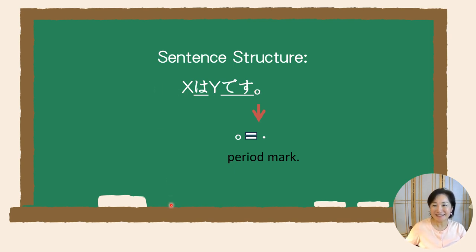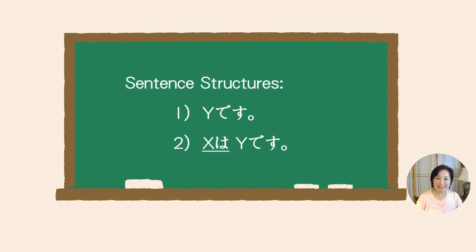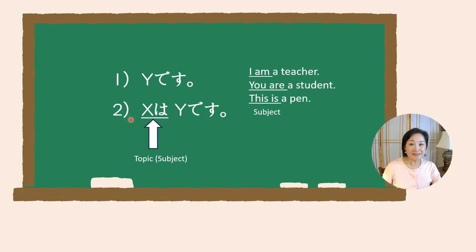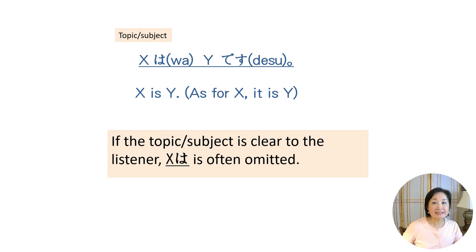That's the breakdown of this sentence structure: X wa Y desu. Now, let me compare two sentences. Number one: Y desu. Number two: X wa Y desu. The difference is the topic. In sentence two the topic is stated, but in sentence one the topic is omitted. In English you must have a subject, but in Japanese the topic — which is the subject — is often omitted, and sometimes it sounds more natural without it. Sentences without subjects are very common in Japanese.